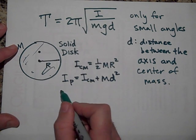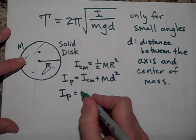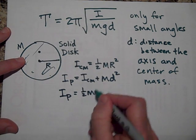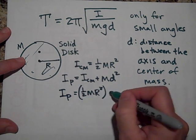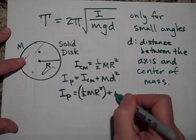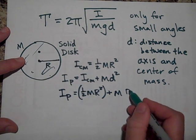So let's do that. That I parallel is equal to I through the center of mass, which is one half MR squared, that's this guy, so that's that term, plus the mass of the whole thing, times this distance squared. Well, that's R over 2 squared.